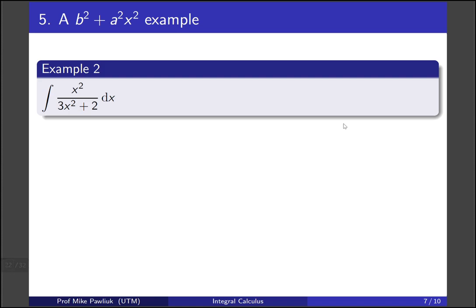Let's do the integral x squared over 3x squared plus 2. So the first thing to do is recognize what kind of Pythagoras are we using. So in this case we're using 1 plus tan squared, because it looks like constant plus something squared.